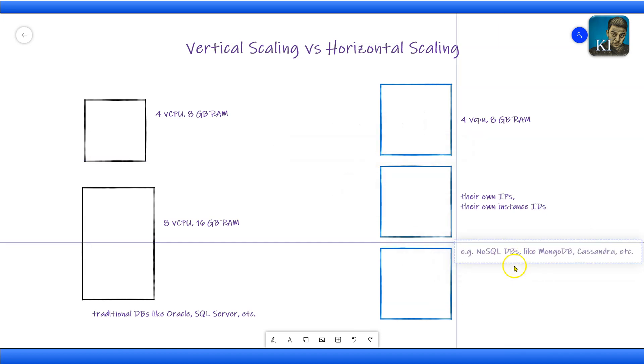If you look at some examples, our NoSQL databases nowadays, like MongoDB or Cassandra, all of these databases support horizontal scaling. Also, when you do EC2 auto scaling in AWS, when more nodes get created, that is horizontal scaling.